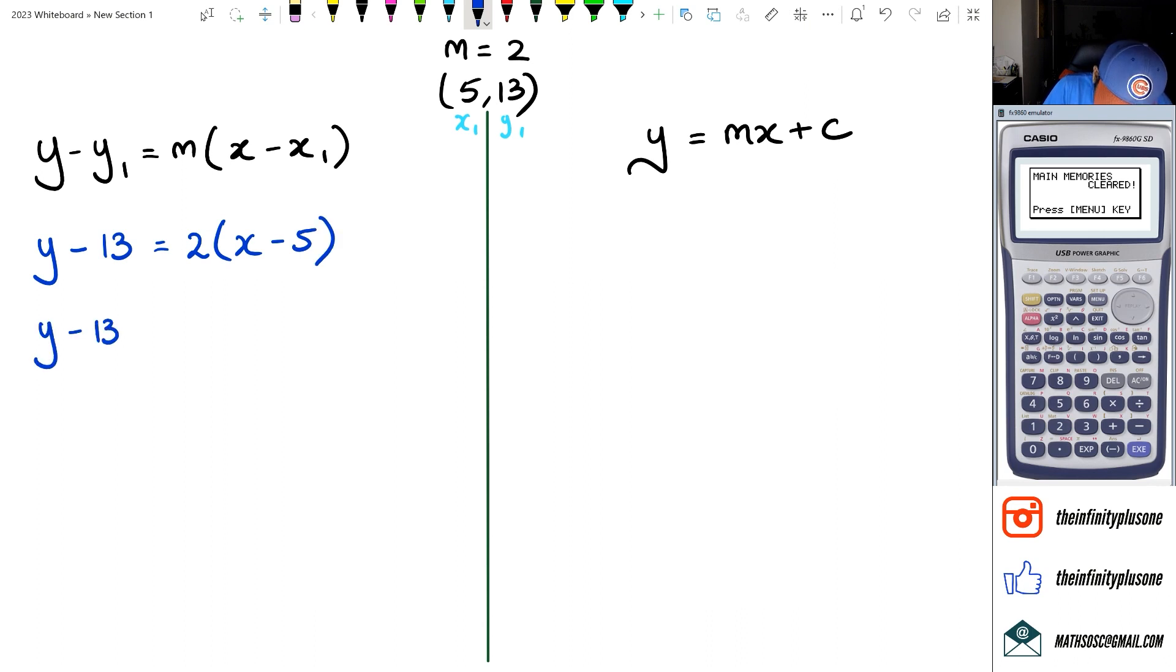All right, so we've got y minus 13 is equal to—we're going to expand the brackets here—so 2 times x and 2 times negative 5, which means we're going to get 2x minus 10.